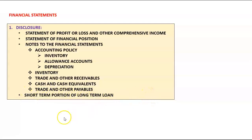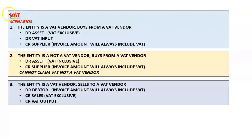The short-term portion of the long-term loan has its own line item under current liabilities — do not include it in trade and other payables. In the long-term loan note, state the total outstanding balance at year end, then deduct the short-term portion transferred to current liabilities, leaving the long-term portion shown as a non-current liability. The note must also disclose the interest rate, repayment terms, and all other surrounding conditions of the long-term liability.